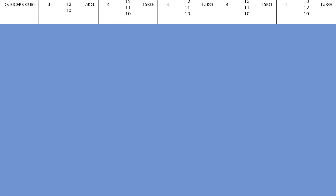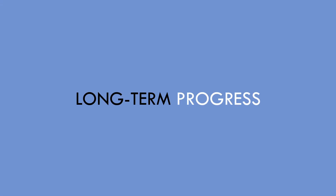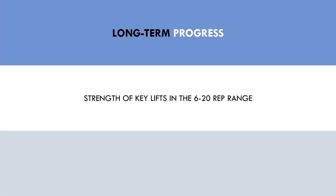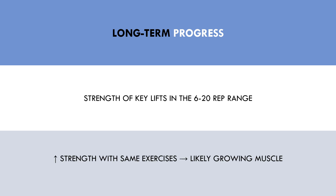The other way we can use strength to gauge hypertrophy is to look at strength in the 6 to 20 rep range from month to month and year to year. If a trainee is gradually using more weight with the same exercises over time, then they are probably seeing muscle growth. For example, if a trainee can perform 80 kilos on the bench press for 8 to 10 reps with good strict form, and then a few years later they are using 100 kilos in the 8 to 10 rep range with the same strict form, then they have likely increased the size of their chest, triceps, and delts.